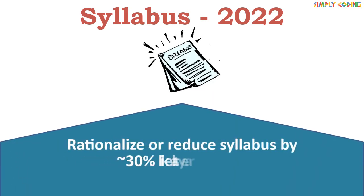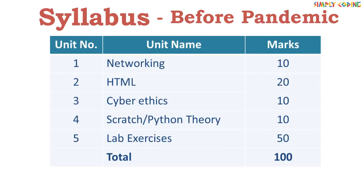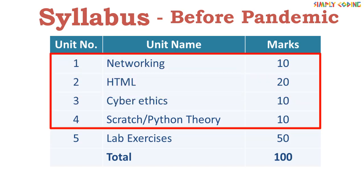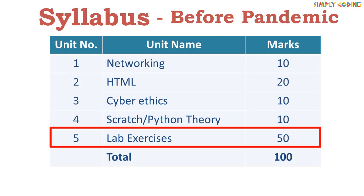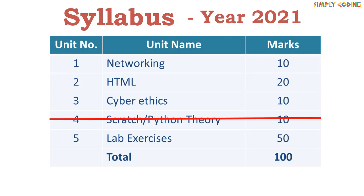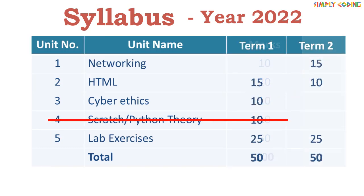From the syllabus perspective, one important declaration is that they have decided to rationalize or reduce the syllabus, like they did last year. Before the pandemic, Class 10 syllabus was divided into four units: Networking, HTML, Cyber Ethics, and Scratch/Python programming, totaling 50 marks of theory and 50 marks of lab exercises. Last year, the Scratch/Python section was completely cut off and its 10 marks were distributed equally between Networking and HTML, increasing them to 15 and 25 marks respectively. This year, the overall syllabus is the same as last year with no Scratch and Python, and is now divided into two terms of 50 marks each.